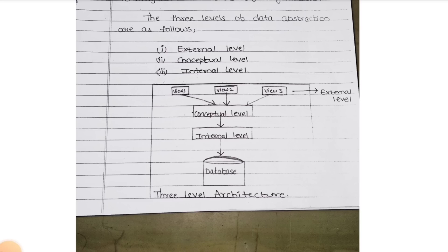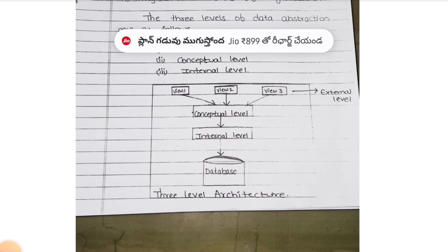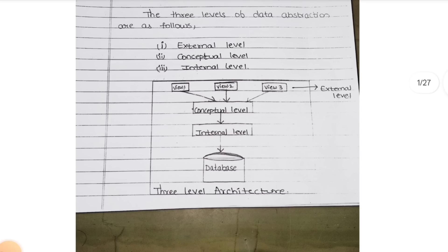Conceptual level is for more authorized persons, except external level. Internal level means data based on the direct level. The principal is the owner of the college, so he or she has full access about the student, about the teaching faculty, about the non-teaching faculty, everything. So she can access the database. These are the three levels in three-level architecture.